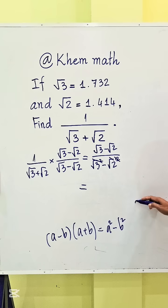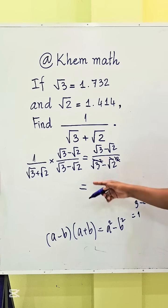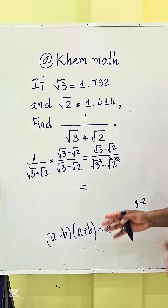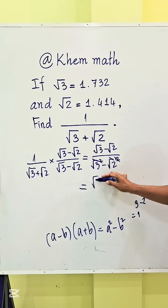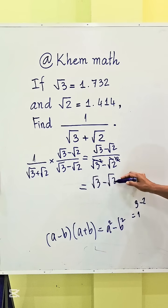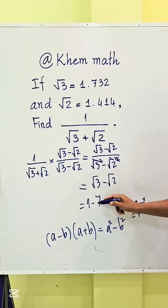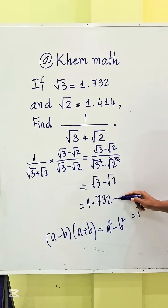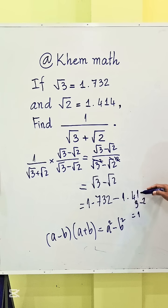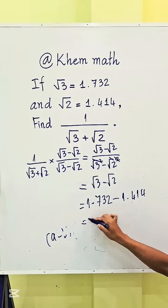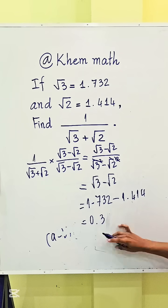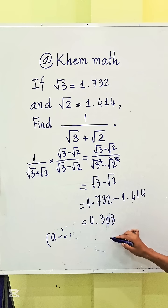3 minus 2 equals 1, so the denominator equals 1 and we don't need to write it. The result is square root 3 minus square root 2, which equals 1.732 minus 1.414, giving us 0.308. So our answer is 0.308.